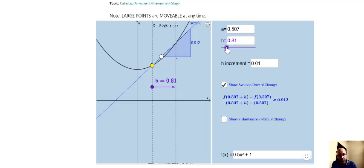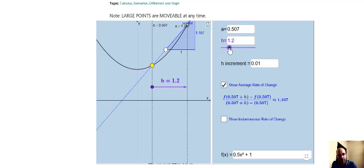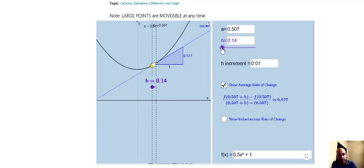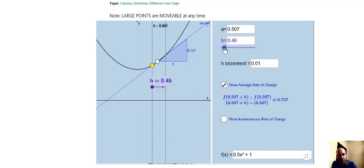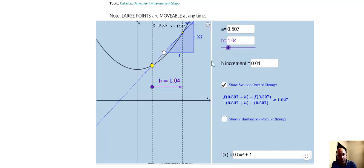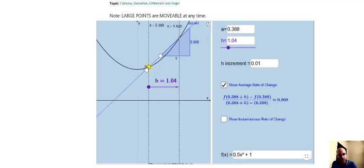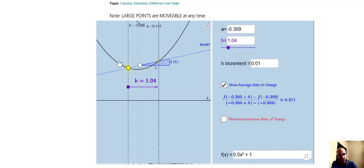You can see the values for the average rate of change there. They change, so it's interesting that if I bring the two points together closer and closer we get a different rate of change, similar to what we were saying before. As I said before, the rate of change is not constant because if we move it around it'll change as well.